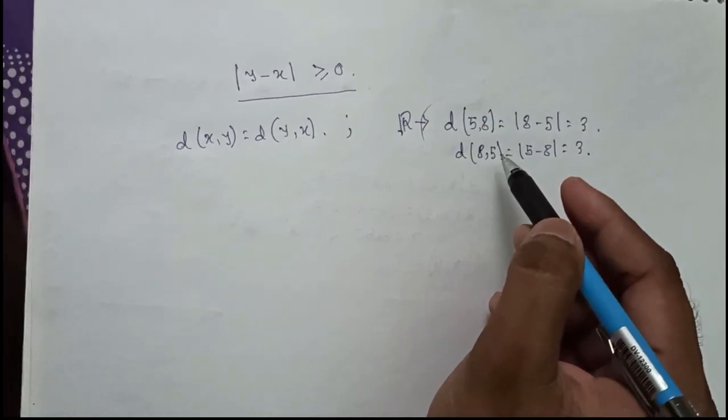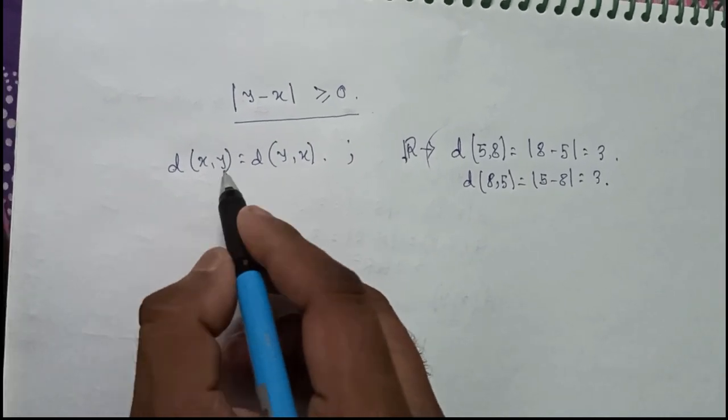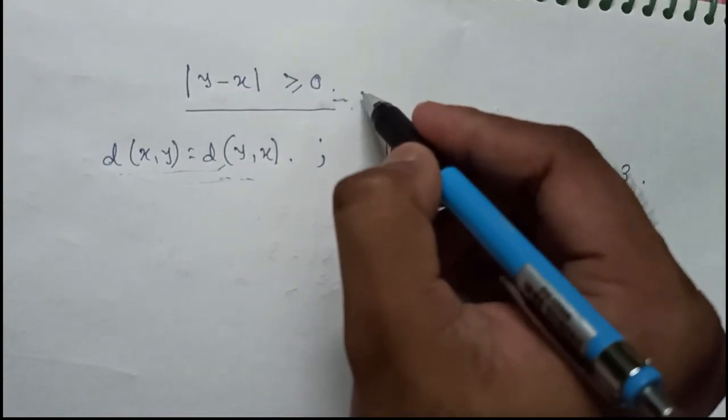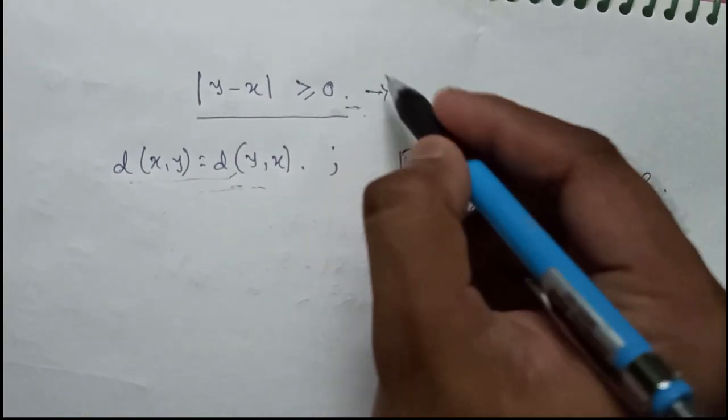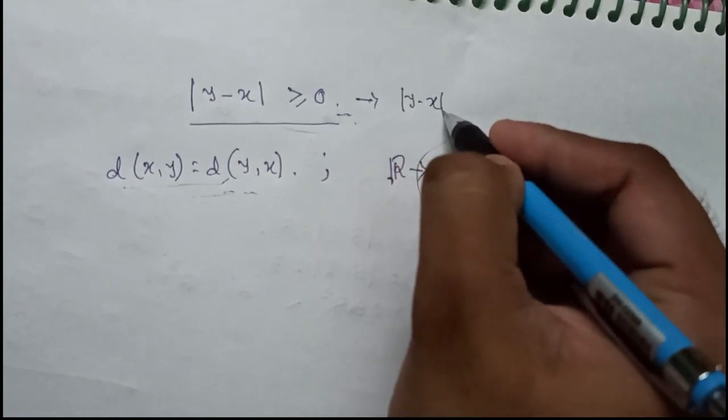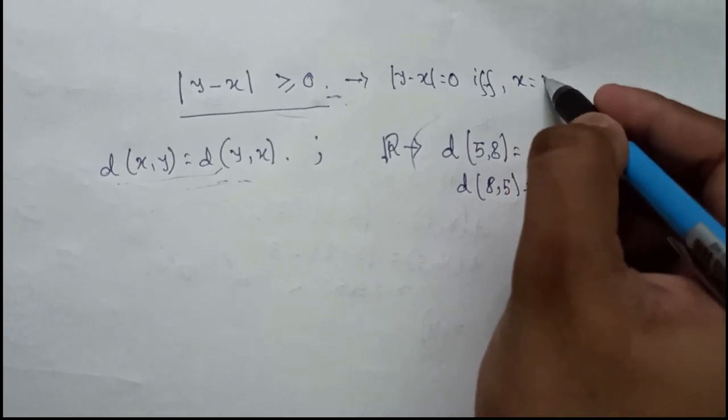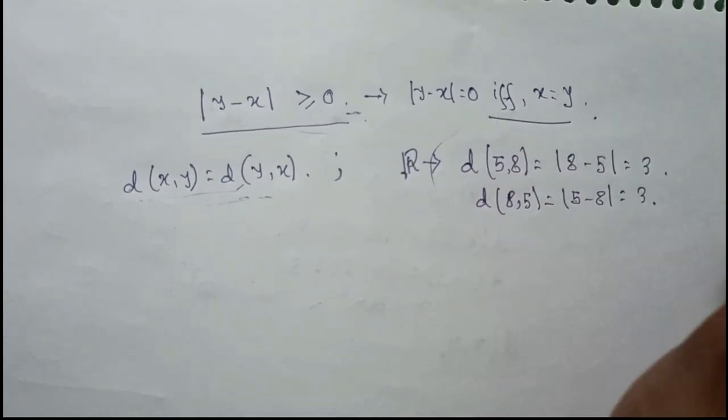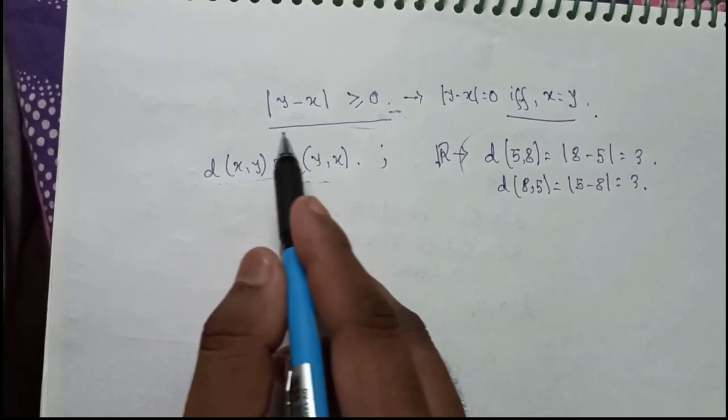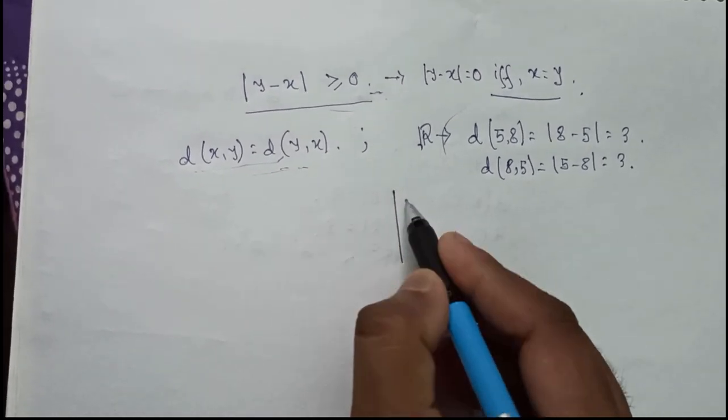And again when it is d of (8, 5) then it is |5 - 8| which is |-3| which in turn becomes 3. So this is equal again. Similarly for all other cases that we have considered, the distance function is symmetric. This one is positivity and this is symmetry. One thing, equality occurs, that is y minus x equals 0 if and only if x is equal to y.